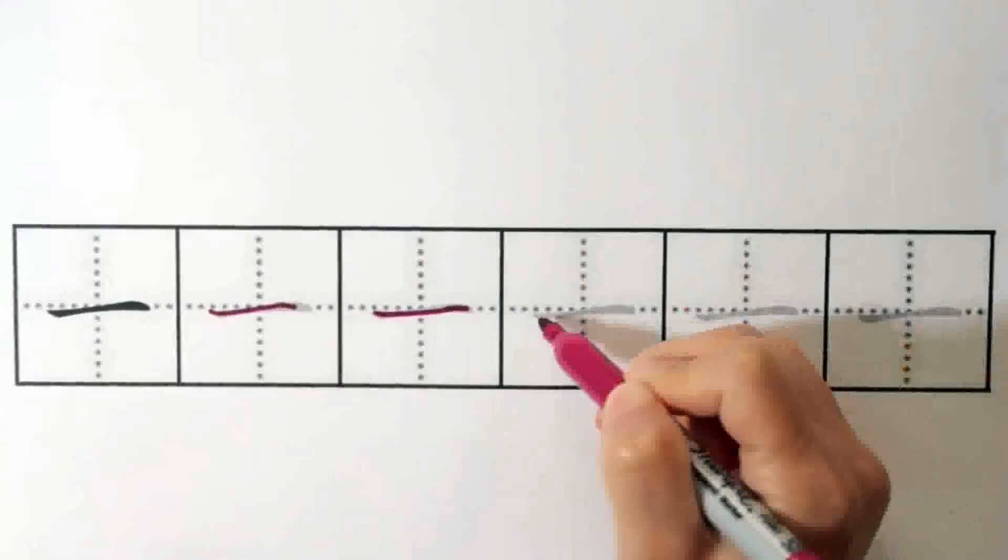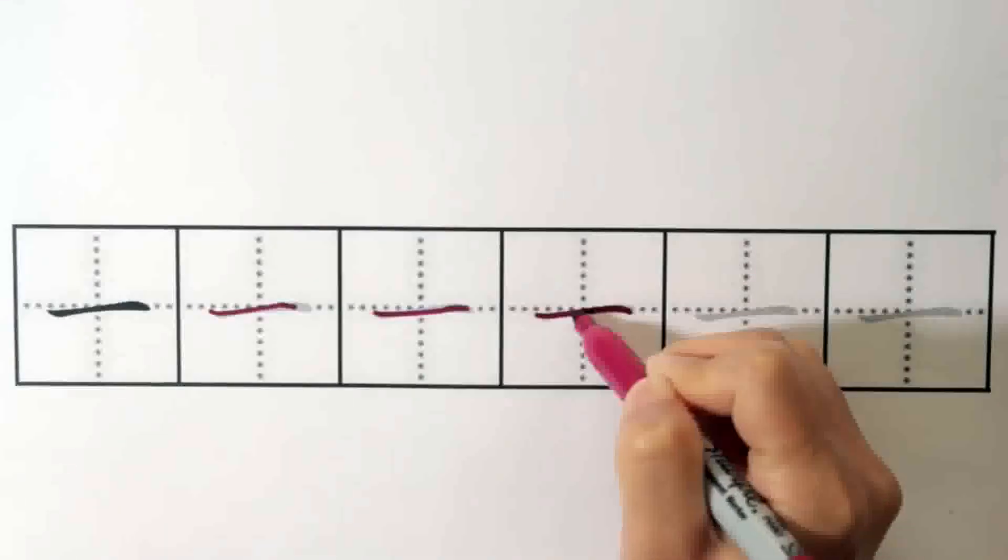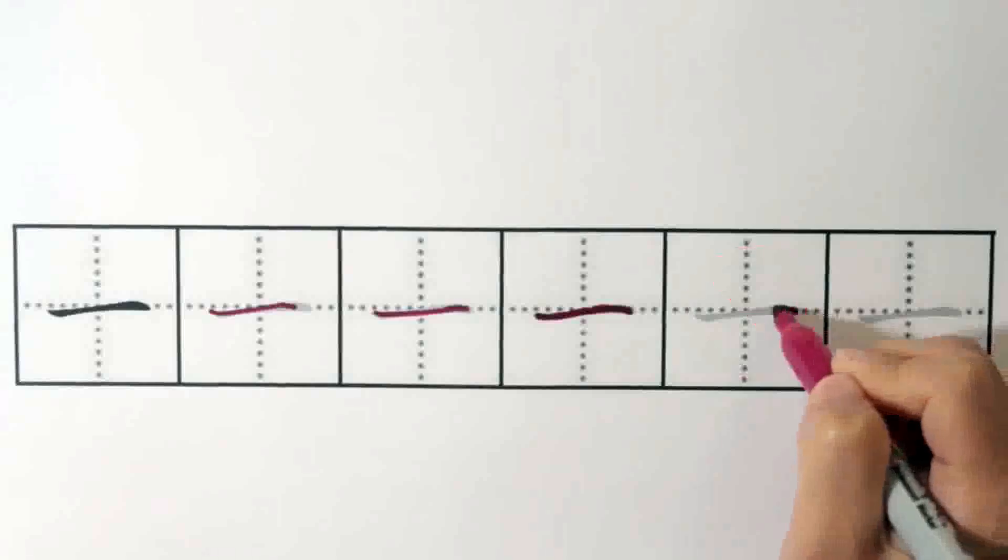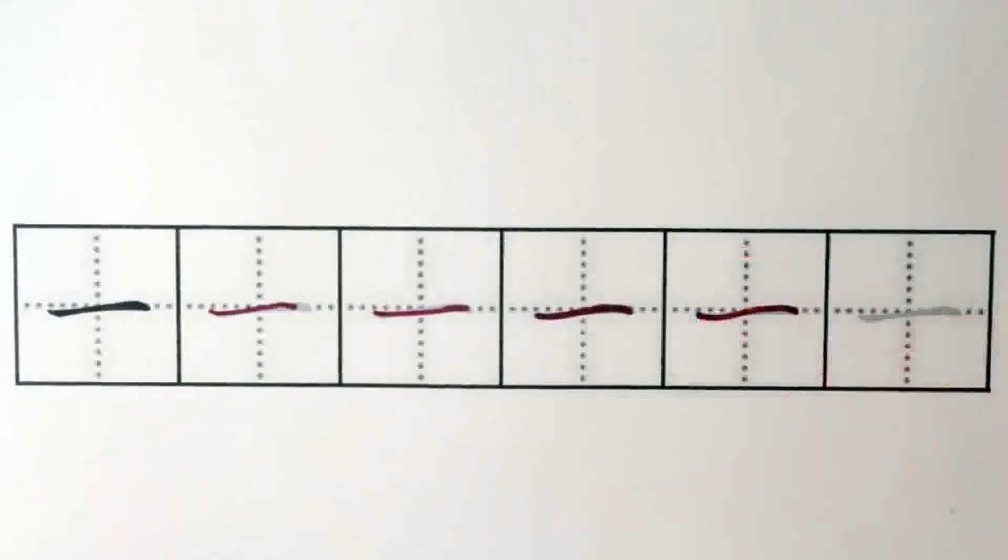Be careful that for each stroke, you write it in one single stroke, without going back and forth like this, and also don't write it backwards like this. Try practicing it a few times.